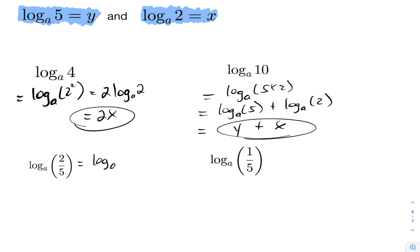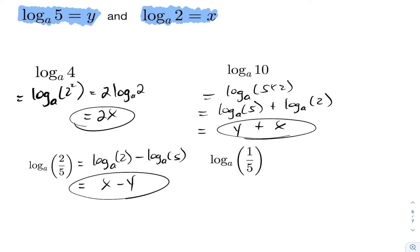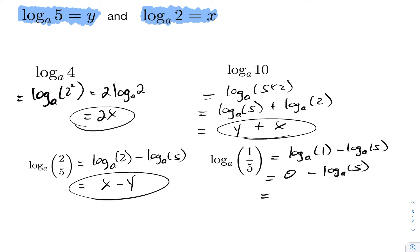For log base a of two-fifths, this is a direct application of the quotient rule: log base a of two minus log base a of five, which equals x minus y. For log base a of one-fifth, applying the quotient rule gives log base a of one minus log base a of five. Since log base a of one equals zero, and log base a of five equals y, the answer is negative y.